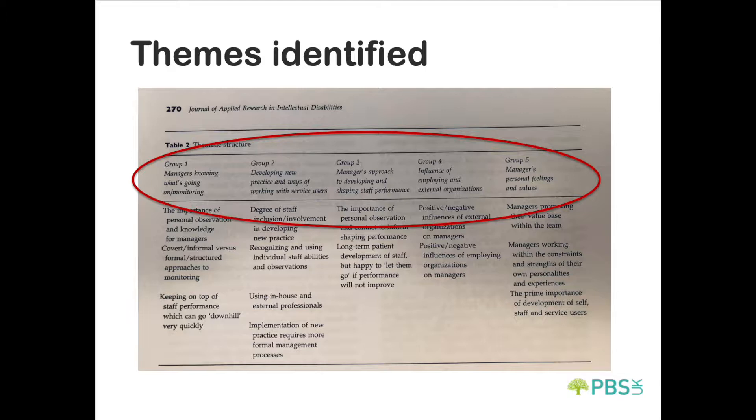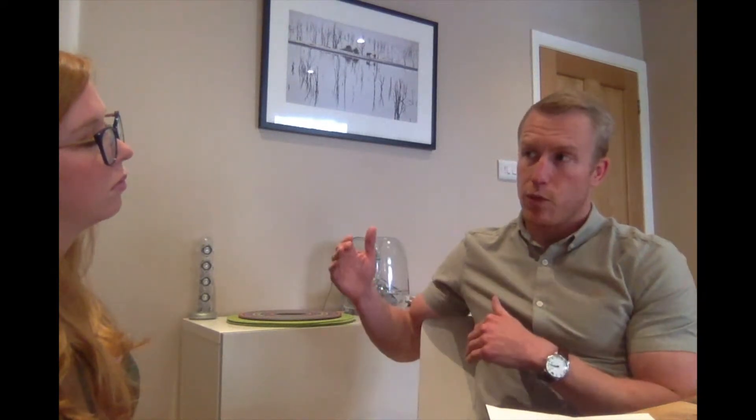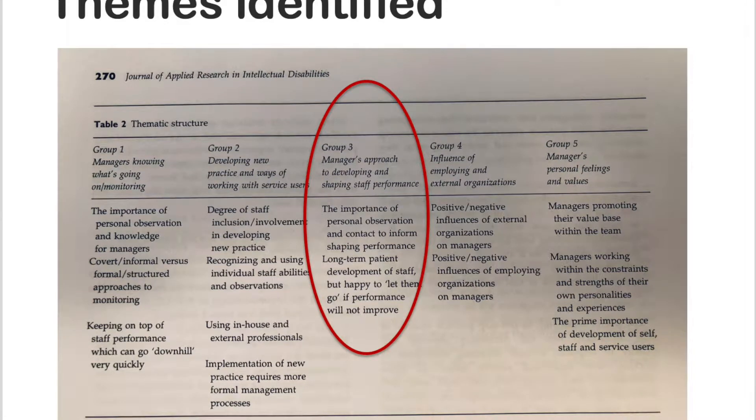The third theme was managers' approach to developing and shaping staff performance — how they change staff practice on an individual level. The two themes underneath that are: the importance of personal observation and contact to inform and shape performance, and long-term patient development of staff, but being prepared to let them go if their performance didn't improve. Making sure you've given staff all the tools and advice they need, but then being willing to make the decision that you've done everything you can and it's still not right.